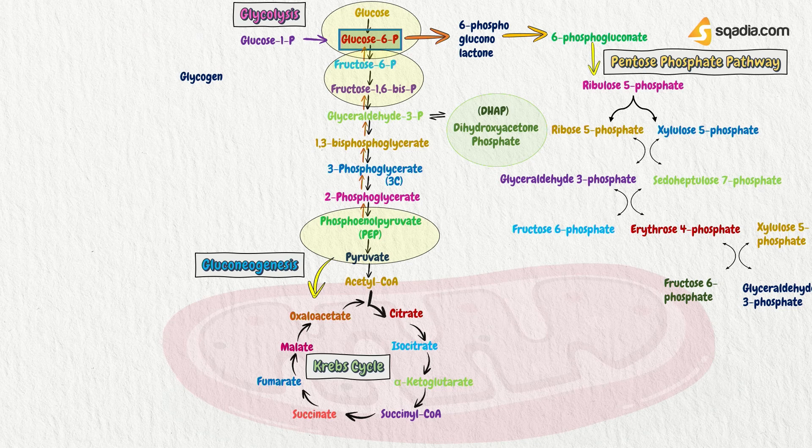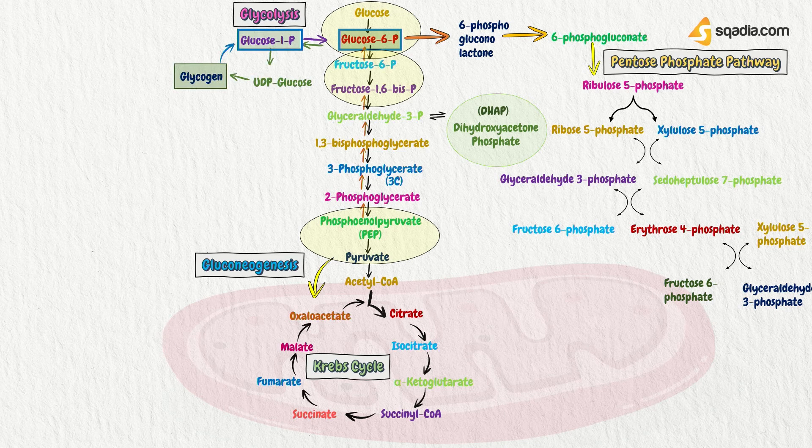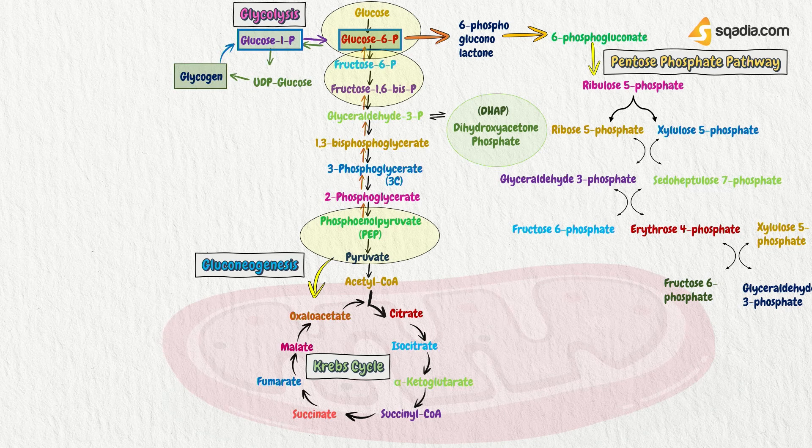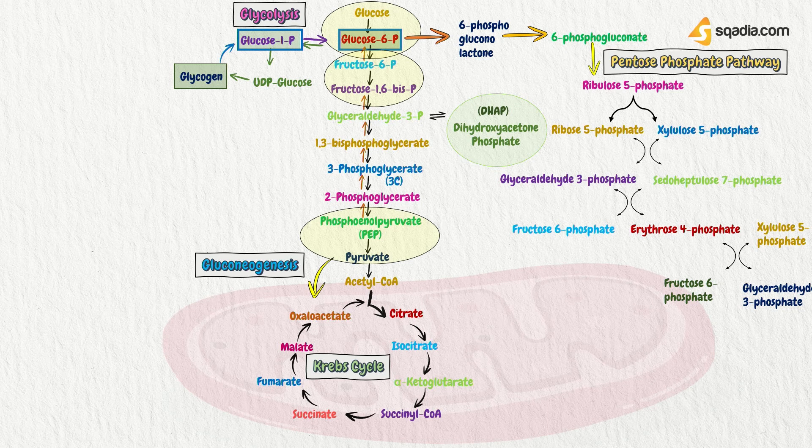Glycogen is a form of storage of glucose inside our body. Now, there is involvement of UDP glucose, and from that, glycogen is made. And the process is known as glycogenesis.